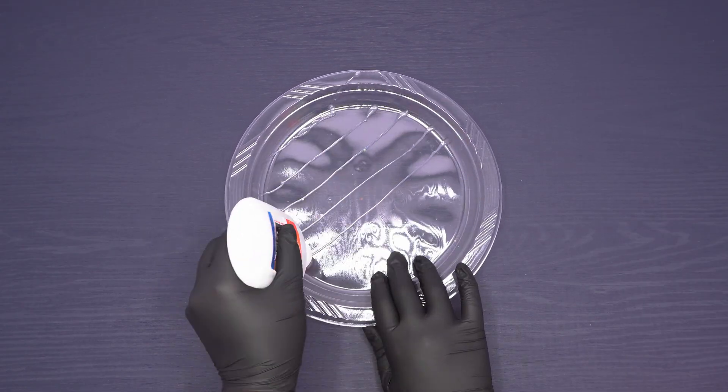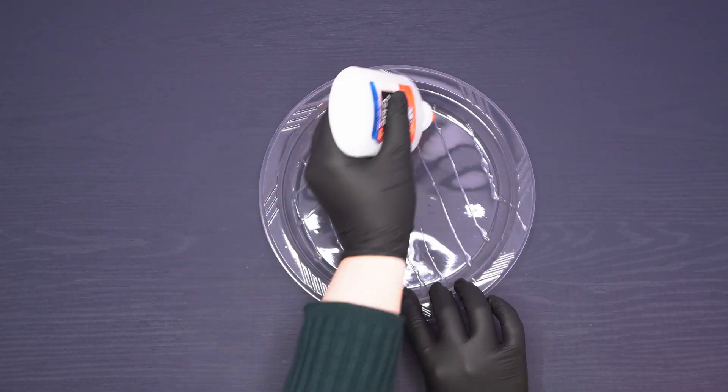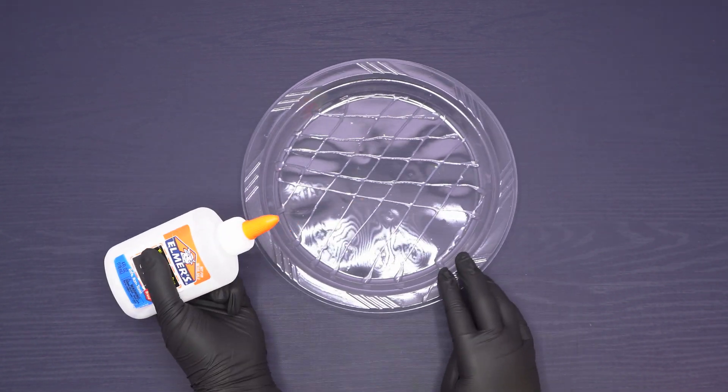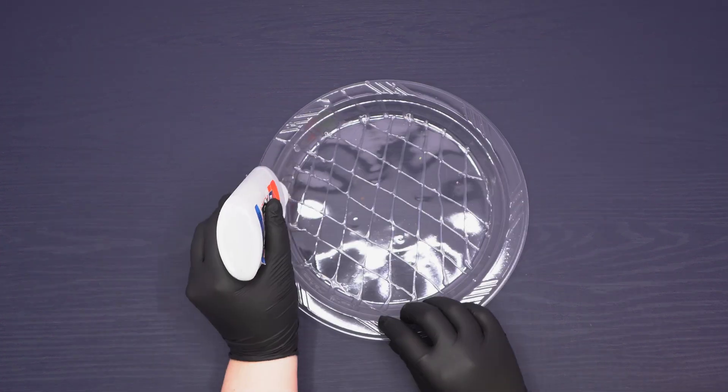Let's begin. Create a diamond shaped design of liquid glue on one plastic plate by drawing straight lines of glue in one direction and then additional lines in the opposite direction. Include some short lines of glue up the edges of the plate as well.